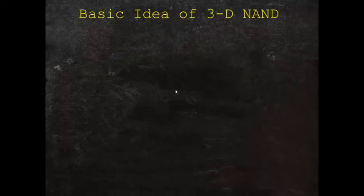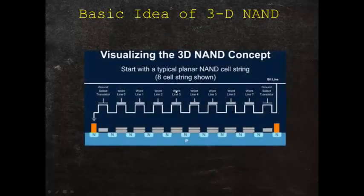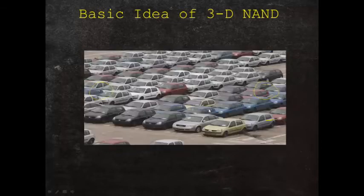To get the basics of this idea, we'll start by looking at a planar NAND array. You notice the planar NAND array has select transistors on either side of a whole string of word lines. You can think of all these word lines as cars parked in a parking lot taking up space. Everybody wants to move to smaller and smaller areas. If real estate is expensive, you really want to stack these things on top of each other.